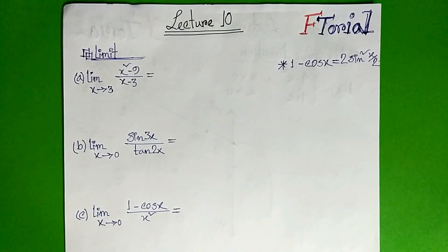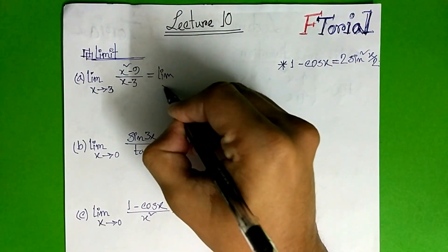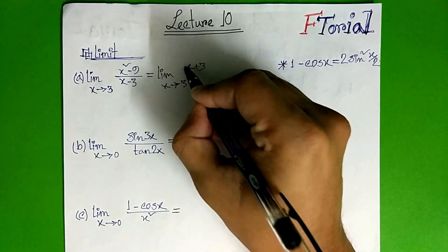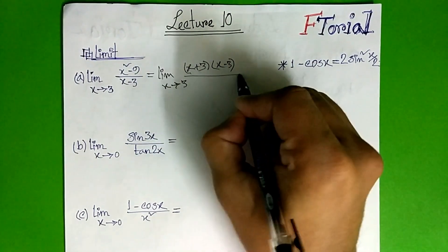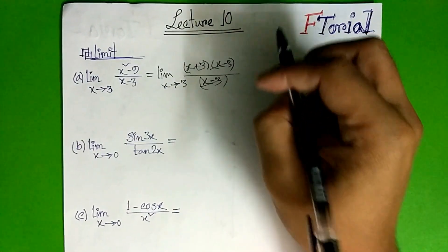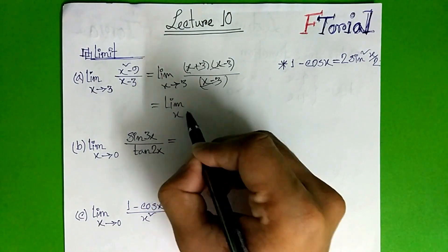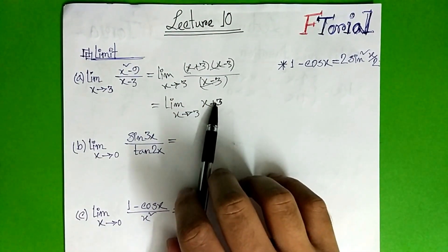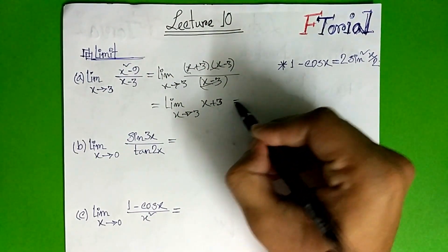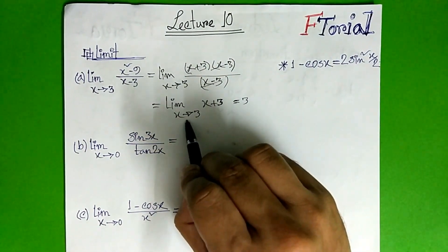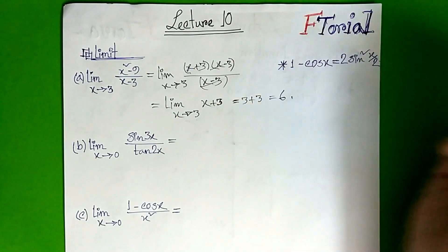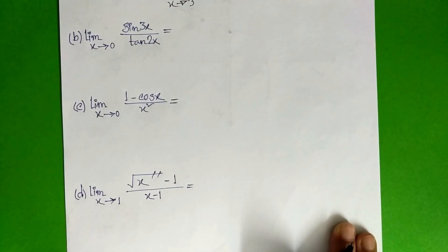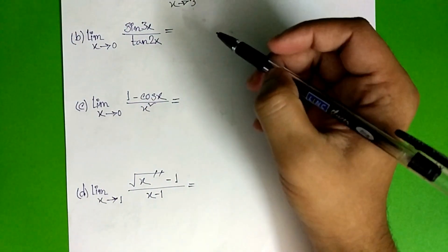So the first example: we are going to find the limit. So we can connect it — limit of 2x plus 3, as x approaches 3. So x plus 3, simplifying: we substitute x equals 3, so three plus three gives us six. So the answer is 6 — it's that simple.